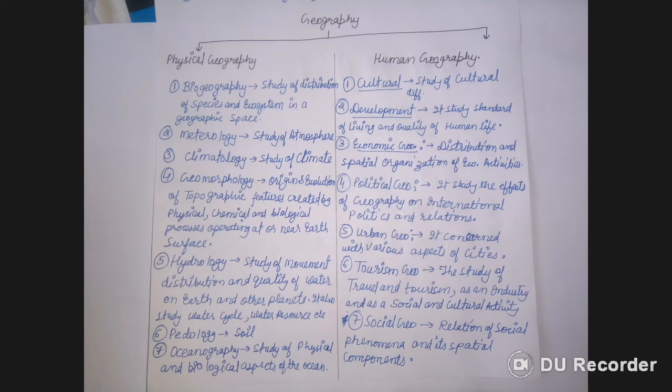In physical geography we study geographical aspects in a physical manner, and it is divided into different branches. Here are the seven major branches of physical geography. The first is biogeography — the study of distribution of species and ecosystems in geographical space.